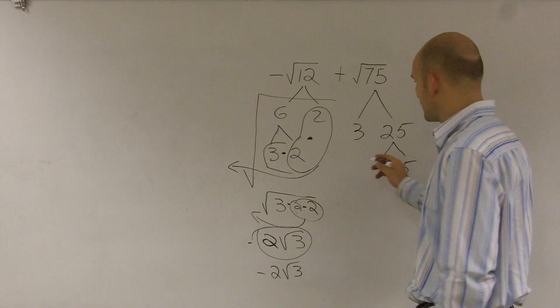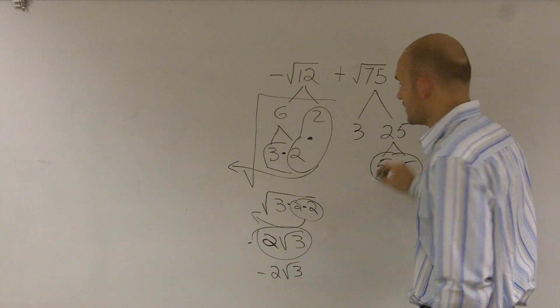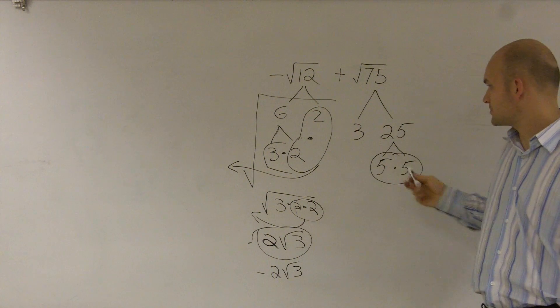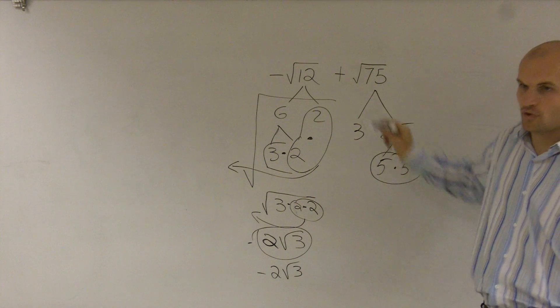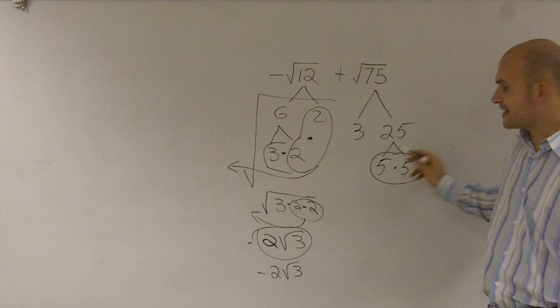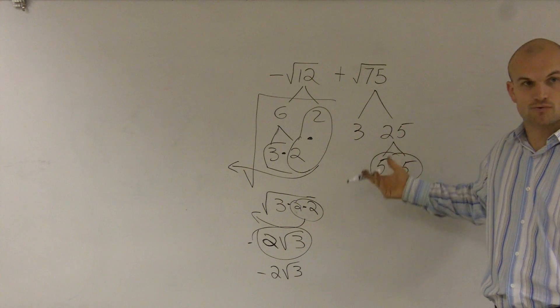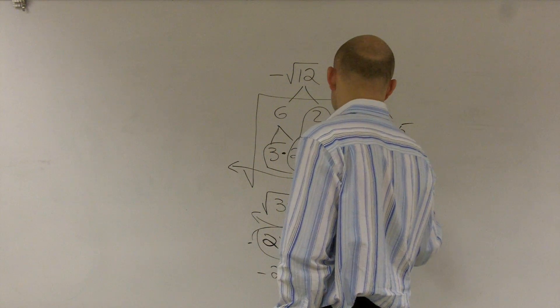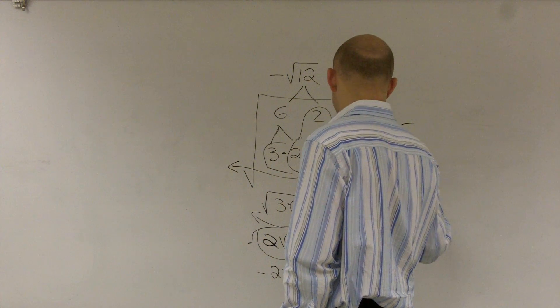So then what I say is since I can group these two together, you always want to group in pairs, OK? You notice I grouped these two because it's a pair of twos. Here's a pair of fives. Now I can pull these out of my square root because 5 times 5 is 25. The square root of 25 is 5. So I can rewrite this as 5 square root of 3.